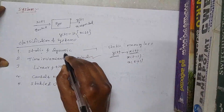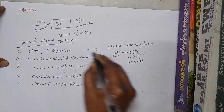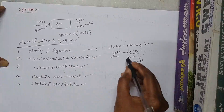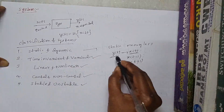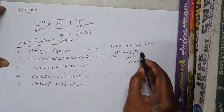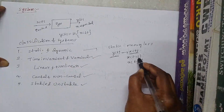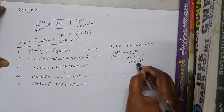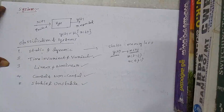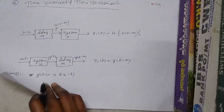Dynamic systems are also called memory systems. Opposite to static systems, the present output depends on the present input, past input, and future input.